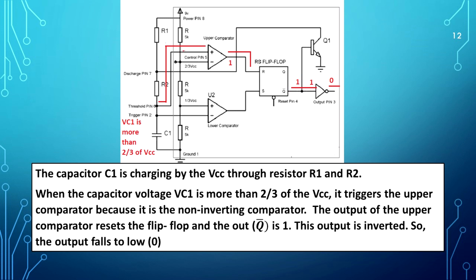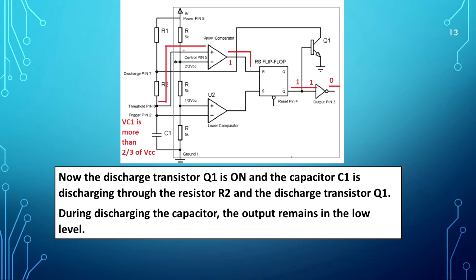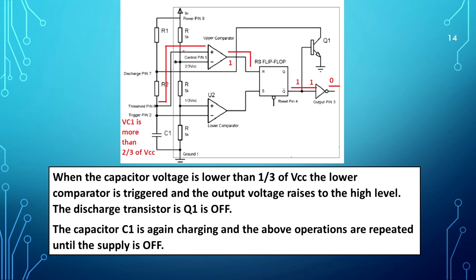When the capacitor voltage VC1 is more than two thirds of VCC, it triggers the upper comparator because it is the non-inverting comparator. The output of the upper comparator resets the flip flop and Q-bar becomes 1. This output is inverted, so the output falls to low 0. Now the discharge transistor Q1 is on and capacitor C1 is discharging through resistor R2 and transistor Q1. During discharging, the output remains at low level. When the capacitor voltage falls below one third of VCC, the lower comparator is triggered and the output rises to high level.